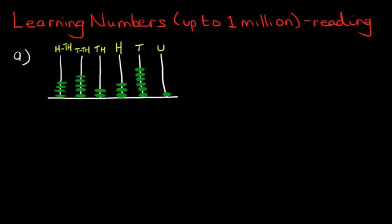Let's start on the right hand side. How many units are there? There is one. The tens: one, two, three, four, five and six — there are six tens.